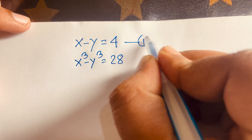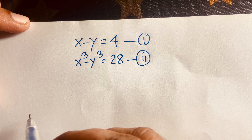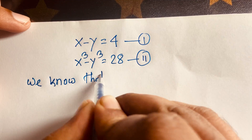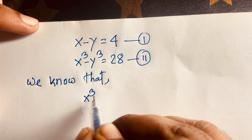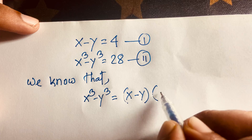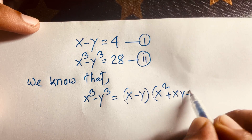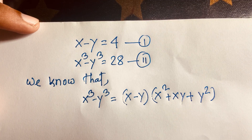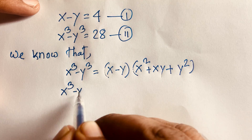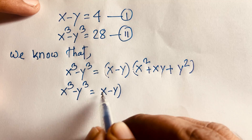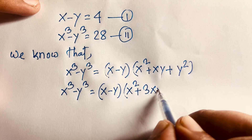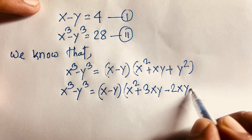So here is our first equation and here is our second equation. We know that x cubed minus y cubed factors as x minus y, times x squared plus xy plus y squared. So this equation becomes x cubed minus y cubed equals x minus y, times x squared plus 3xy minus 2xy plus y squared.